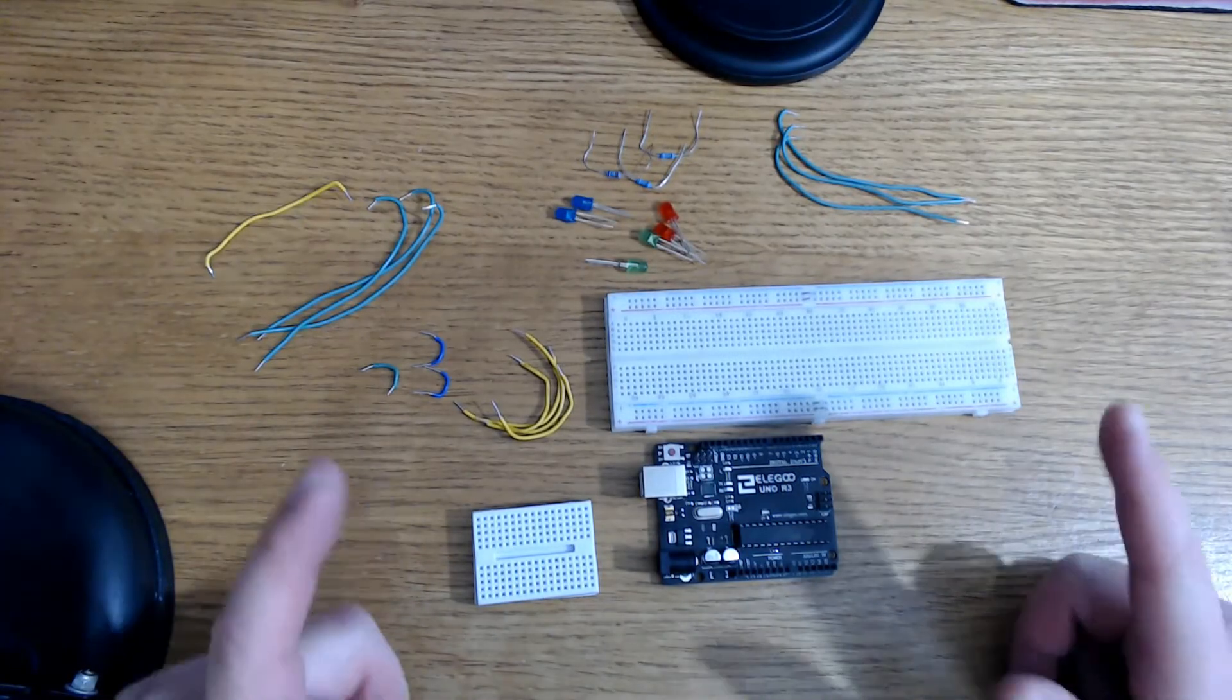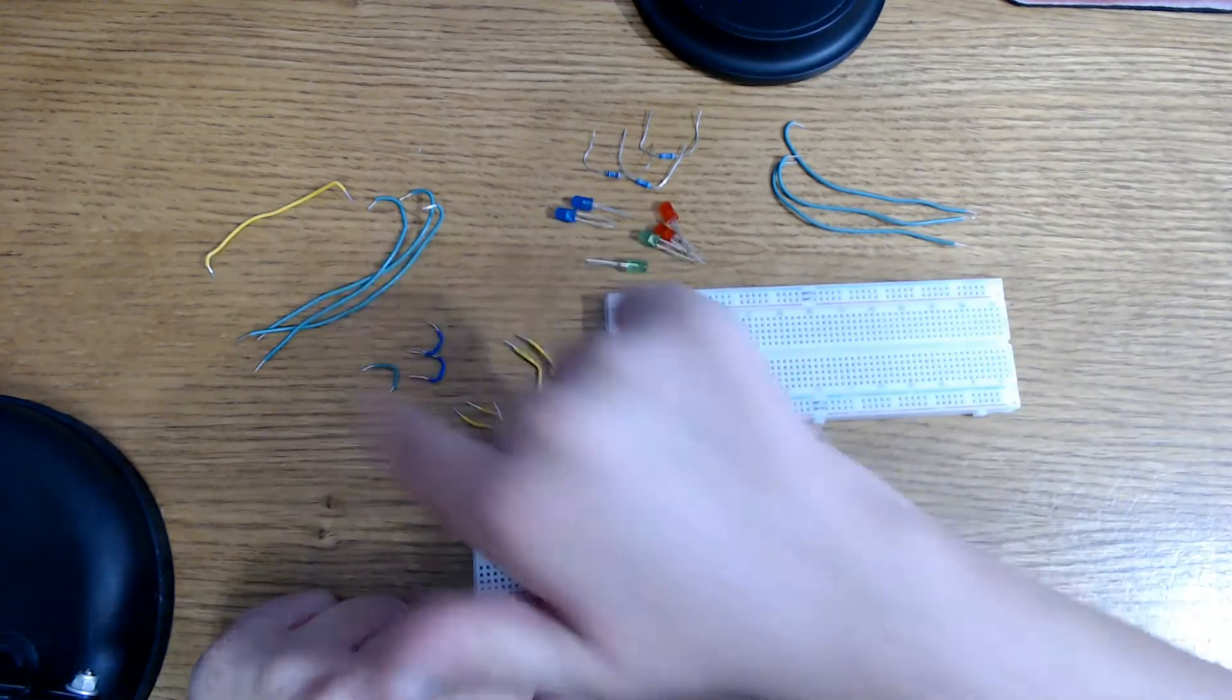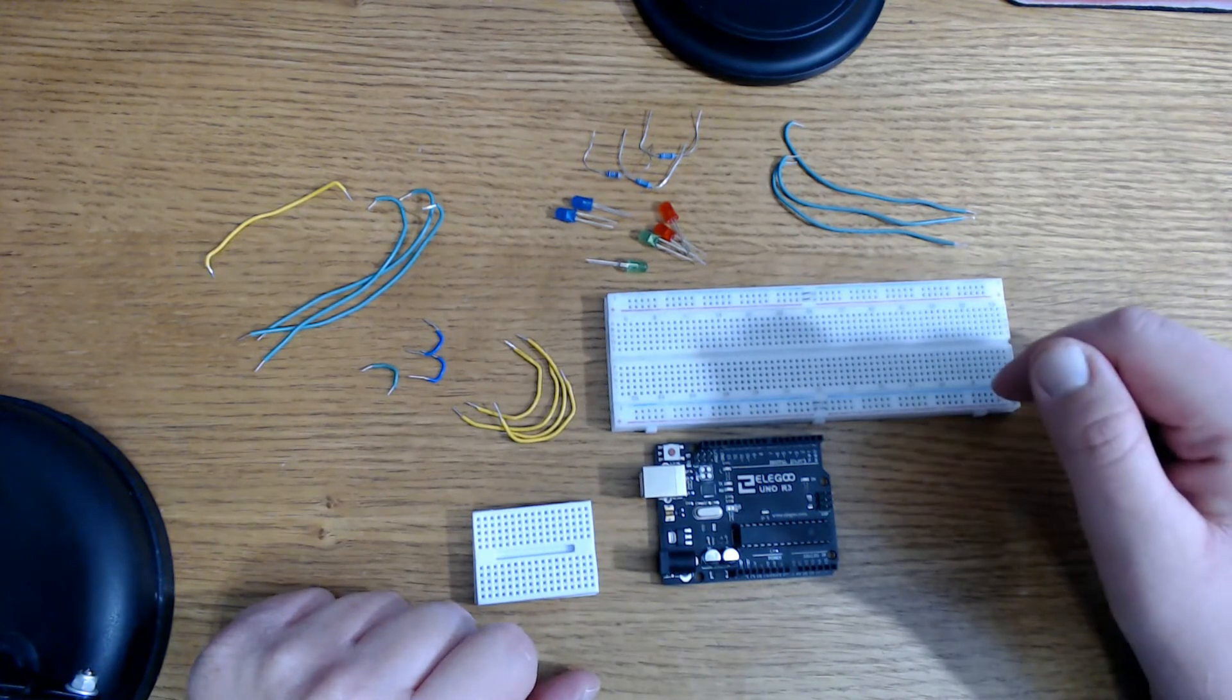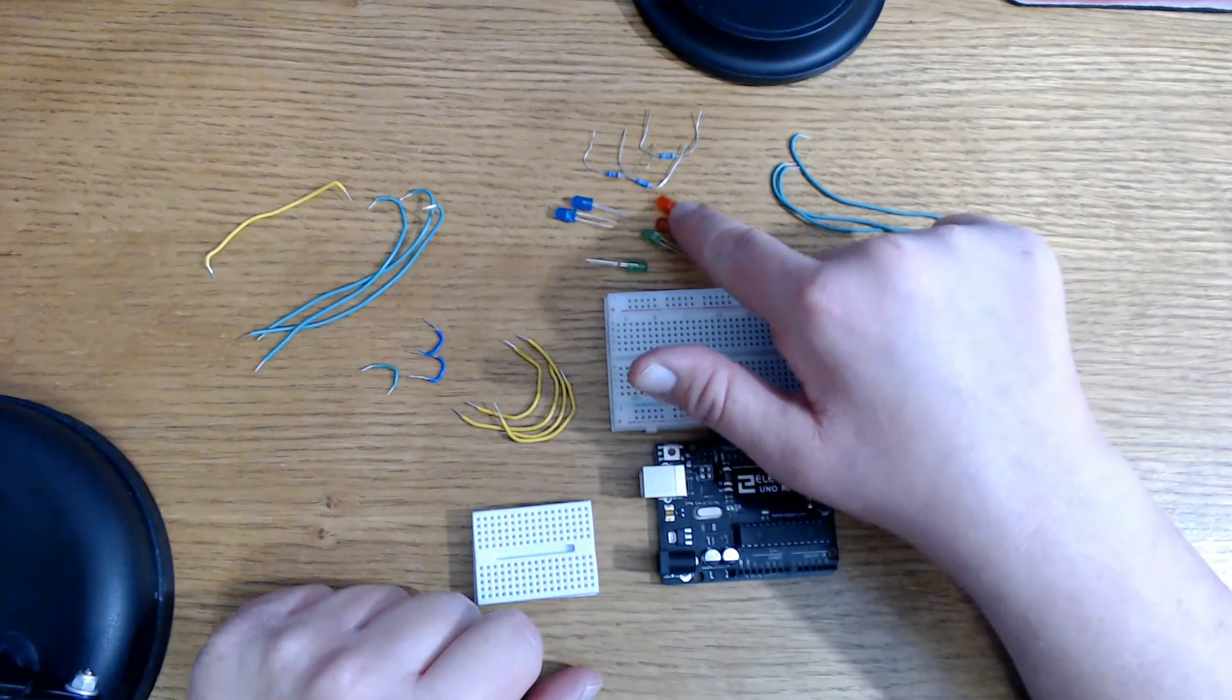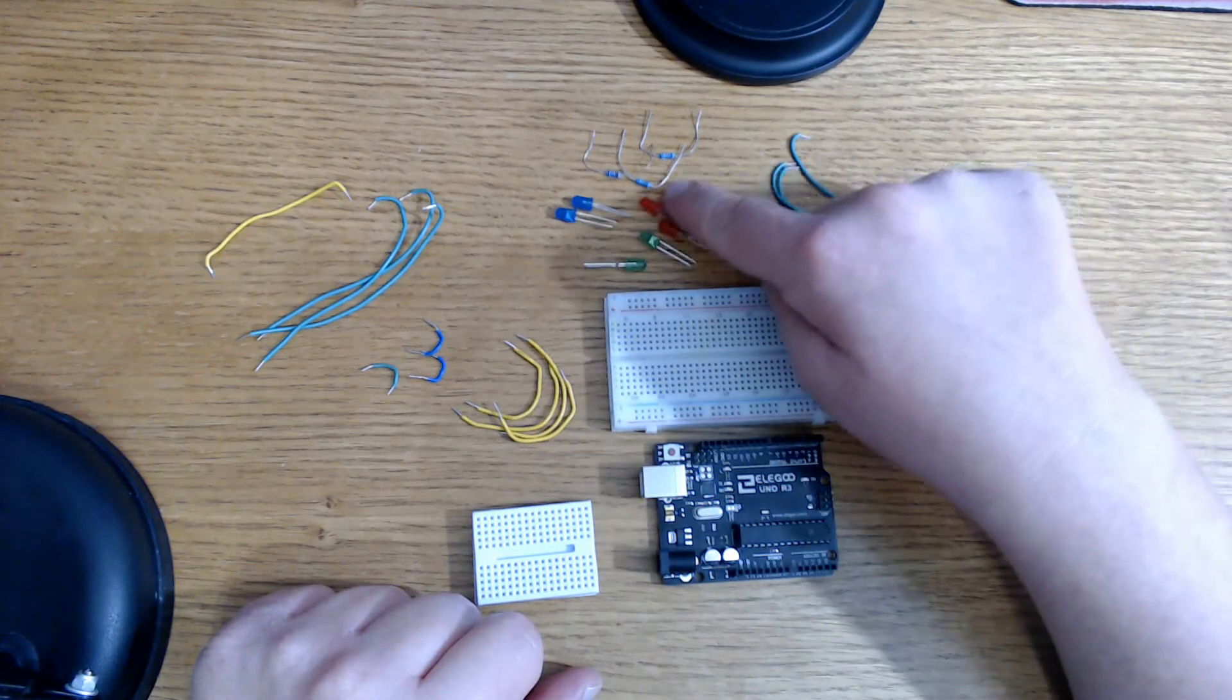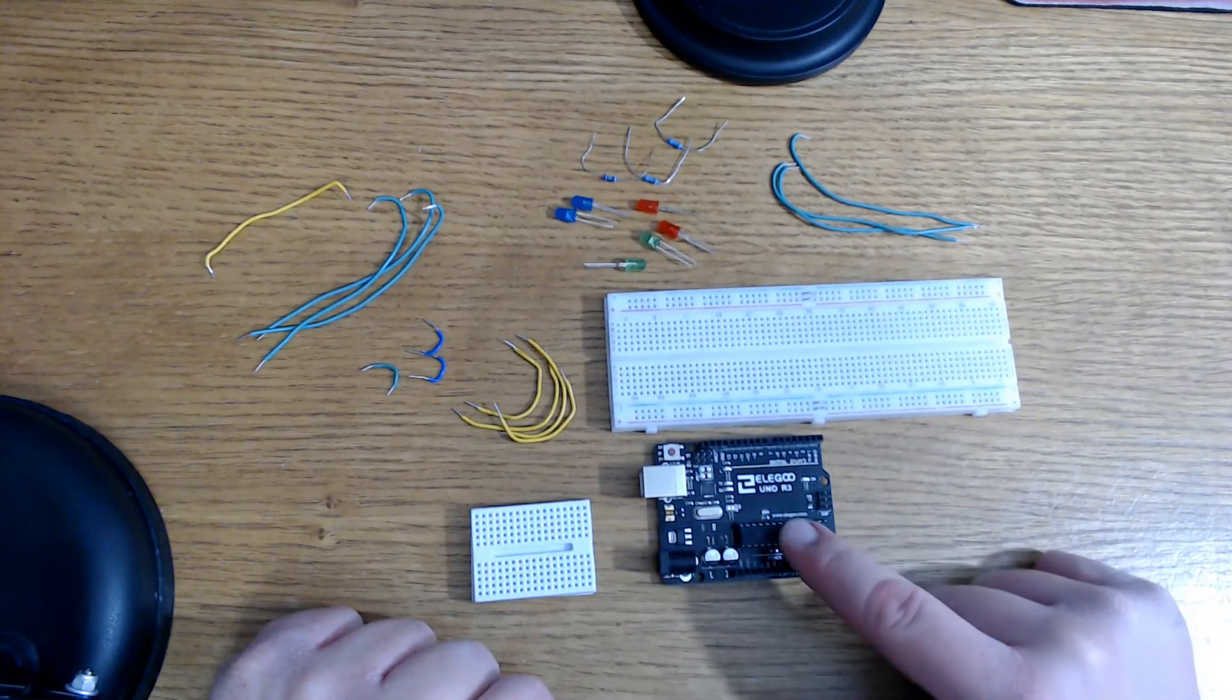Here are the components that I'm using for this project. I'm using a 22 gauge wire that I cut and clipped myself. You can also use just regular DuPont wires that are male to male, or you can cut your own just like I did. I'll also be using two LEDs of each color: two red, two green, two blue. I'm also using three 220 ohm resistors. I'm using a large breadboard, a smaller breadboard, and an Elegoo Uno.